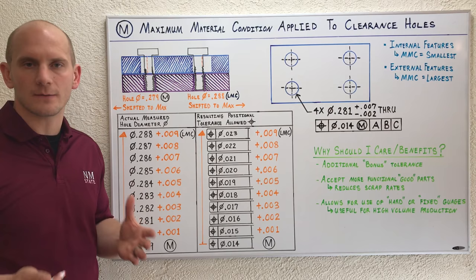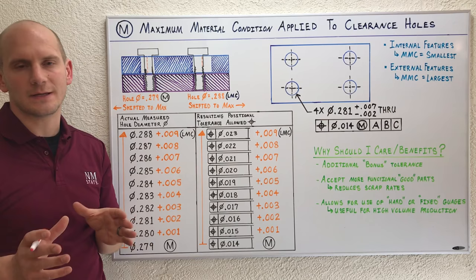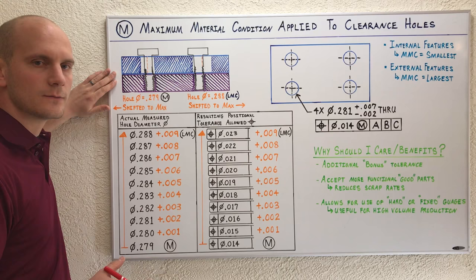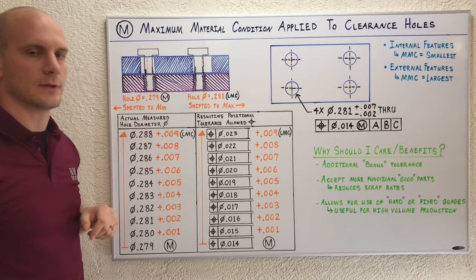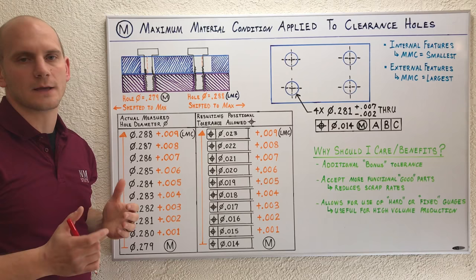To convey the concepts today I wanted to use an assembly shown here using this section view. Here I have a bottom plate with quarter-twenty tapped holes, a top plate with quarter-inch clearance holes, and fasteners threading into the bottom plate. This clamps the two pieces together, a pretty common mechanical design situation.